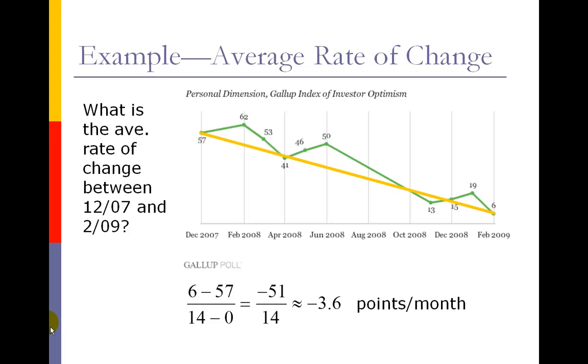The answer to this question is negative 3.6 investor optimism points per month. That's going down because it's a negative - we have a negative slope because our graph is decreasing.